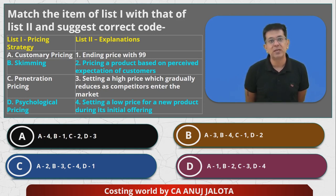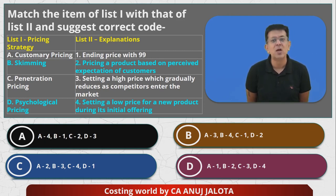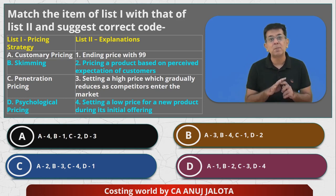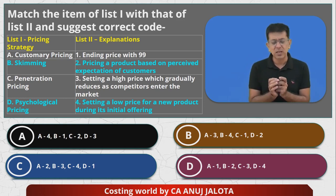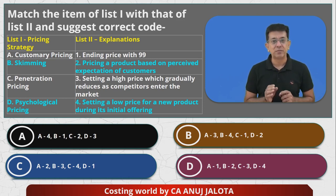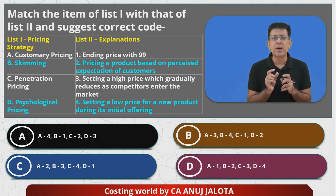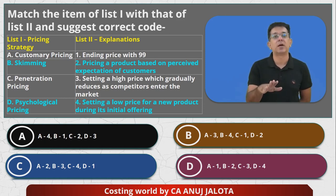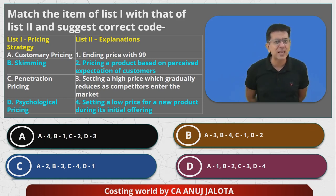So skimming — B — matches with point 3: setting a price which gradually reduces as competitors enter the market. Obviously as competition comes, your product that was unique may not remain unique, so you'll have to reduce the price. Penetration pricing is exactly the reverse of skimming. It means I want to enter the market with the aim of capturing market share — I'm not looking at profits. In the beginning I want everybody to try my product.